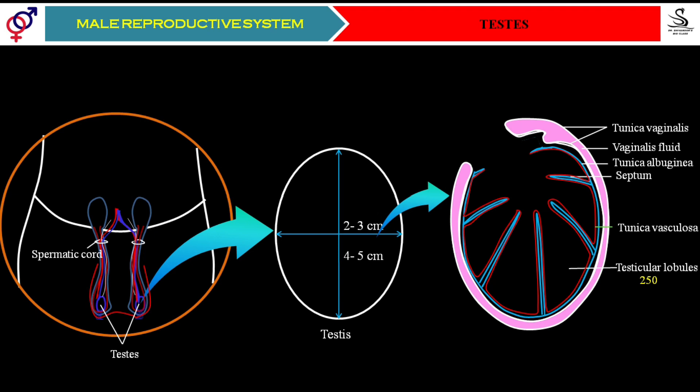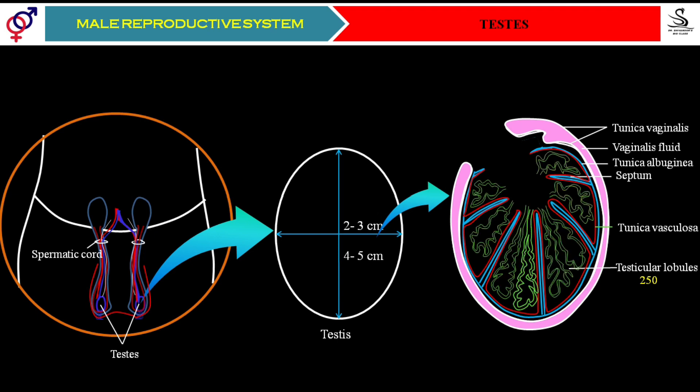Inside the tunica albuginea we find one more very important layer called tunica vasculosa. This vasculosa layer provides nutrition to all the structures inside the testes — the seminiferous tubules and all the other cells present there. In every compartment, or in every testicular lobule, we find the presence of highly coiled seminiferous tubules, with about one to three seminiferous tubules per testicular lobule.